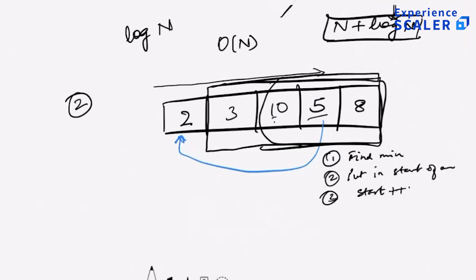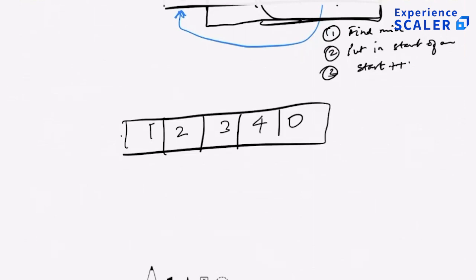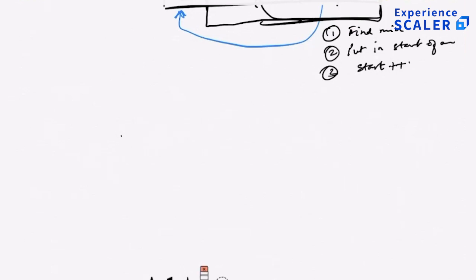Insertion sort will still be O(n) if only one element was not in its right position and every other element was in the right position. For example, if the array was 1, 2, 3, 4, 0. Bubble sort is a variation of exactly this. Bubble sort, as the name suggests, is like bubbling something to the top. What you do is compare all adjacent elements one by one.